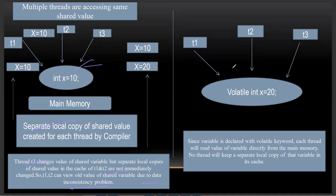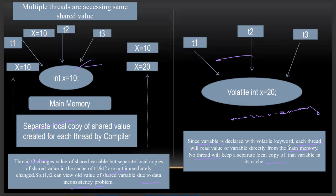But in the volatile variable, there are three threads — T1, T2, T3. Since the variable is declared with the volatile keyword, each thread will read the value of the variable directly from the main memory. No thread will keep a separate local copy of that variable in the cache. This is the important part. This is the volatile keyword's technical aspect or concept.